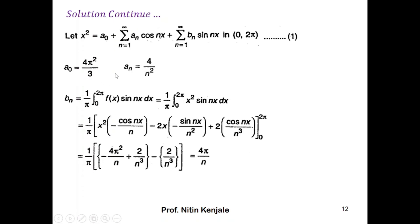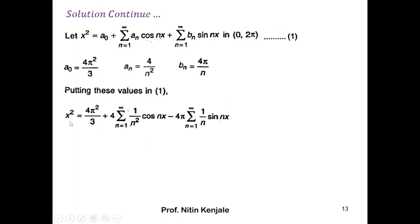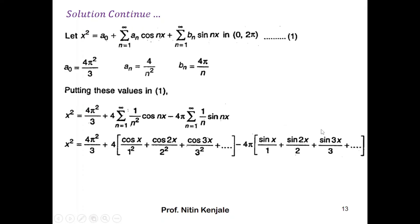Now we have found the values of all Fourier coefficients: a₀ = 4π²/3, aₙ = 4/n², and bₙ = −4π/n. Substituting them back into the Fourier series equation, the Fourier series of f(x) = x² is: x² = 4π²/3 + summation of (4/n²) cos(nx) + (−4π/n) sin(nx). This series can also be expanded by substituting values of n.